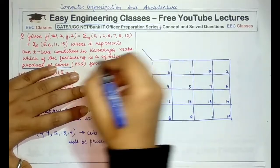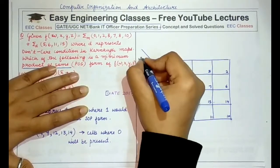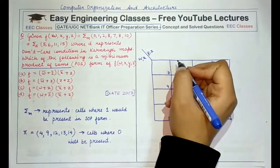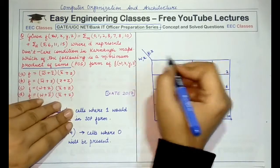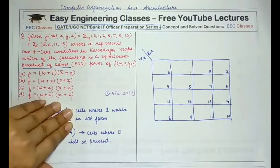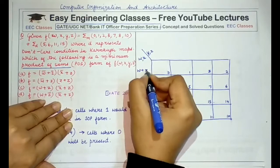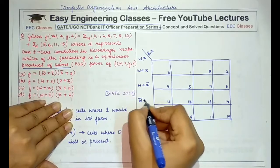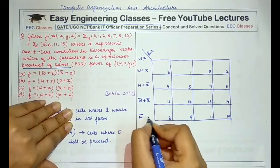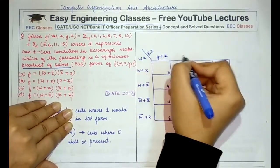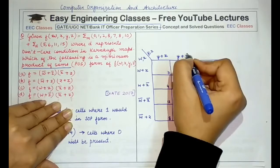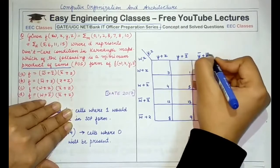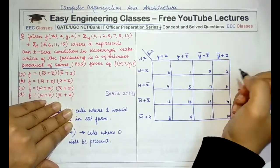Since we have 4 terms W, X, Y, and Z, here we will write W and X, and here we will mention Y and Z. Specifying the values for 0, 0, 0, 1, 1, 0 and the corresponding expressions: W' + X' which is 0, 0, then W' + X, then W + X which is 1, 1, and W + X', and similarly here Y + Z which is 0, 0, Y + Z' which is 0, 1, then Y' + Z' which is 1, 1, and the last would be Y' + Z.